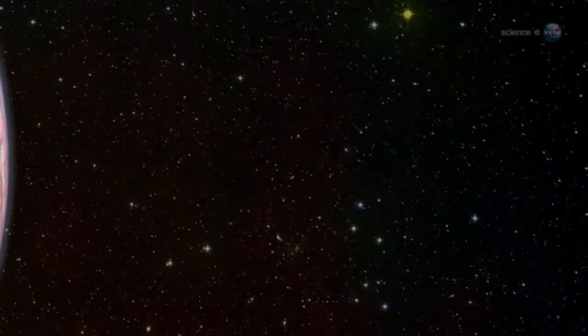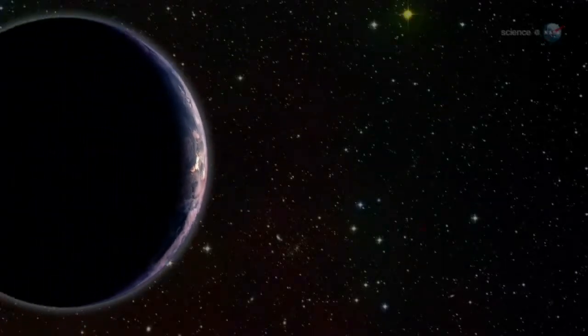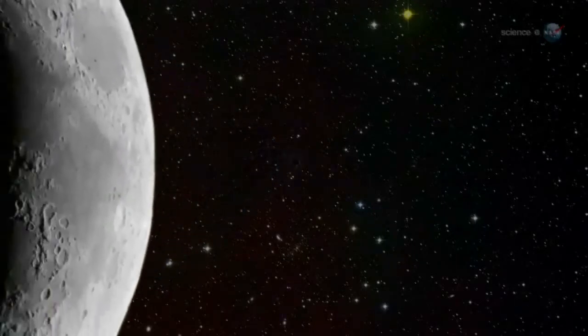When the hunt for exoplanets began, the focus was on Earth-like worlds, planets like our own that might support alien life in distant solar systems. Yet planets as small as Earth are difficult to detect when they circle stars hundreds of light-years away. Indeed, only a handful have been found so far.